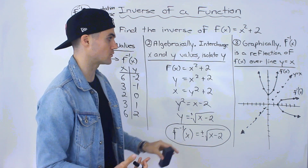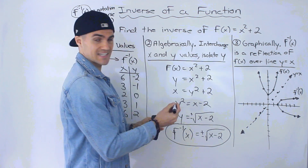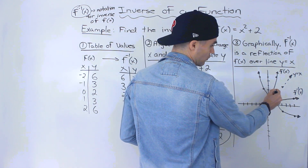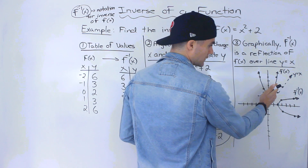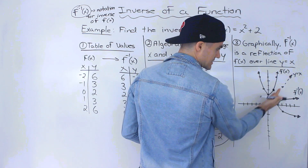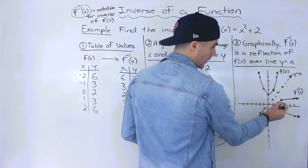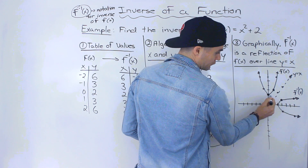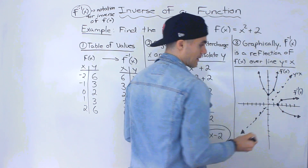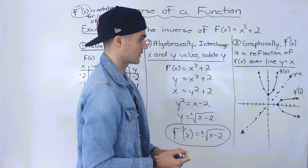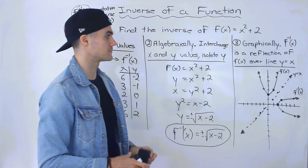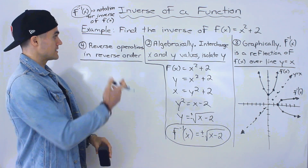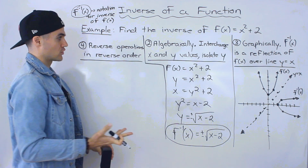You can actually see this on a point-by-point basis. For example, if I take the point one and three on the function and reflect it over this line, I'd end up with three and one. Or if I take the point zero and two and reflect it over this line, I get two and zero. You're just interchanging the x and y values.